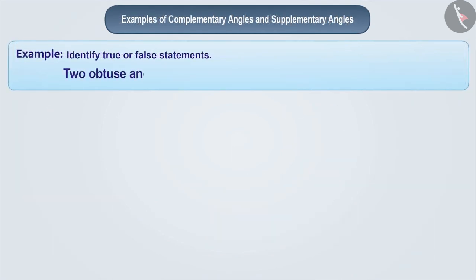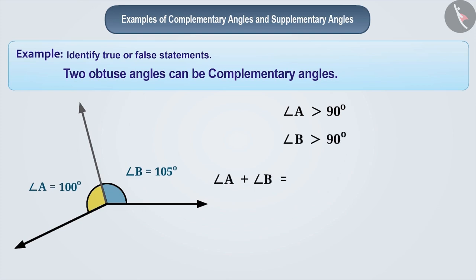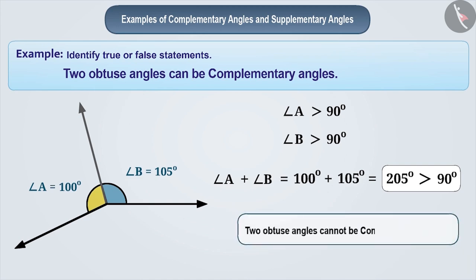Statement: Two obtuse angles can be complementary angles. Let's find out whether this is true or false. Suppose angle A and angle B are obtuse angles. This means angle A is greater than 90 degrees and angle B is also greater than 90 degrees. If we add both angles, their sum will be greater than 90 degrees. Therefore, two obtuse angles can never be complementary angles, and the given statement is false.